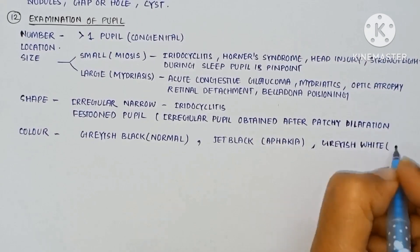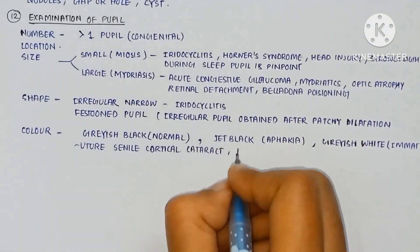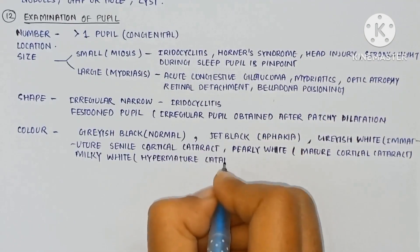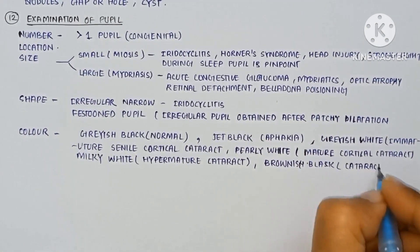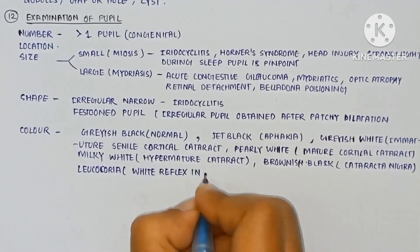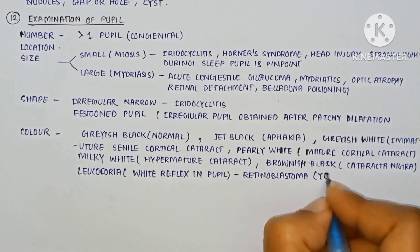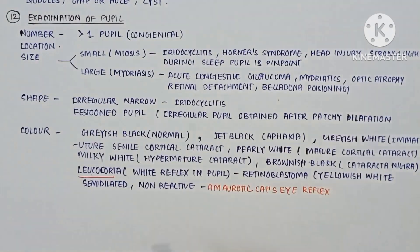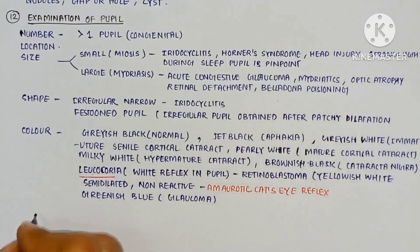Normal is grayish black, jet black in aphakia, grayish white in mature senile cortical cataract, pearly white in mature cortical cataract, milky white in hypermature cataract, brownish black in cataract nigra, leukocoria white reflex in pupil reaching the retinoblastoma, yellow white semi-dilated non-reactive pupil amaurotic cat's eye reflex, greenish blue in glaucoma maybe. The pupillary reflexes we can check.